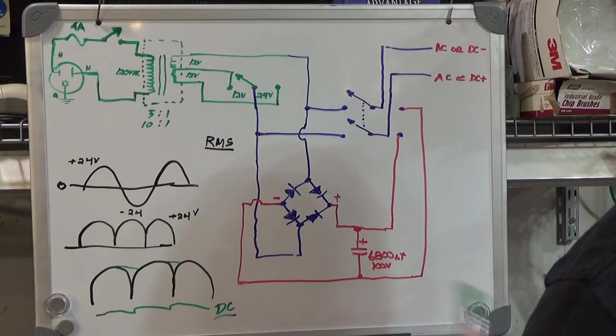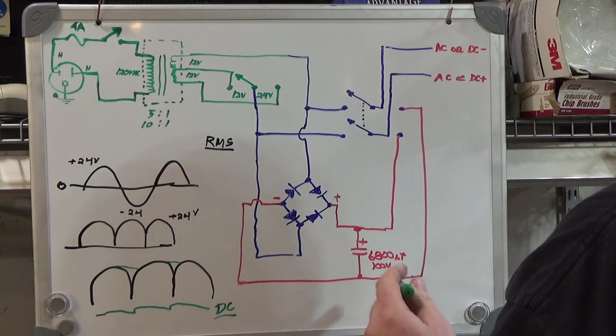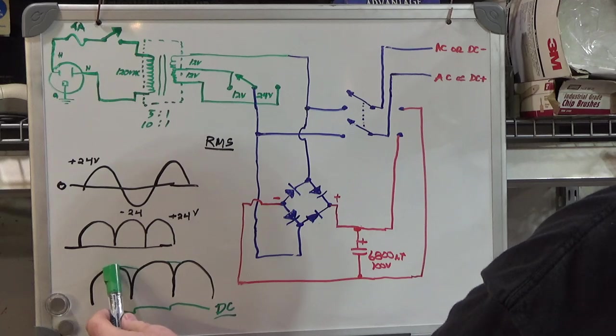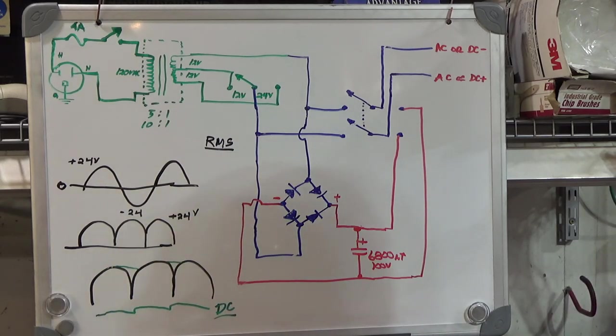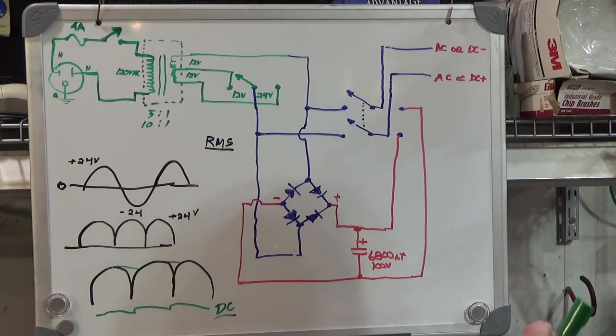Now remember when I was talking about this root mean square value? When you prop up the voltage with the capacitor on the output, the output comes a lot closer to the peak value, which is greater than this RMS value. Where that comes into play is that I chose a 6800 microfarad 100 volt capacitor.